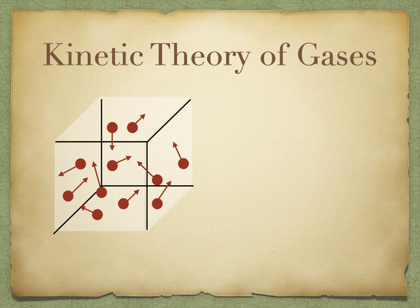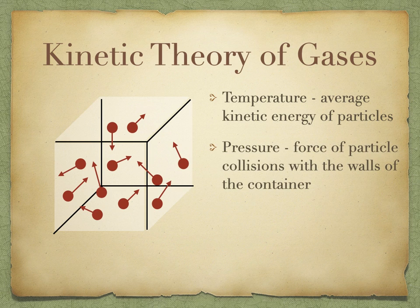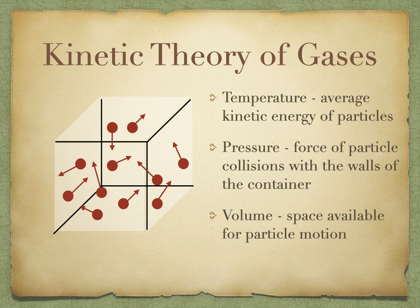There are three primary kinetic properties or variables to consider. First is temperature, scientifically defined as the average kinetic energy of particles in a sample of matter. The arrows on the gas particles designate their direction and speed — at low temperatures particles move slowly, at higher temperatures they move faster. Second is pressure: a force exerted over an area, like particles slamming into the sides of a container. Third is volume — the space that is free for those particles to move around in.